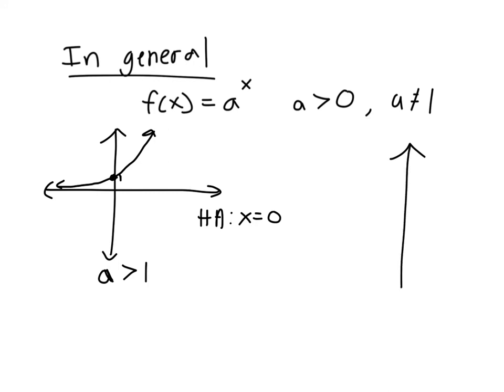And then if a is between 0 and 1, such as 1/3, that's what we saw in the previous example. We still go through this point 1, right? Because when x is 0, it's still 1. The f(x) will still be 1. But it will just go in the other direction. So it will look like you get close to 0 and then you go up like this. So it will be a reflection of when a is greater than 1. But you'll still have a horizontal asymptote at x equals 0.